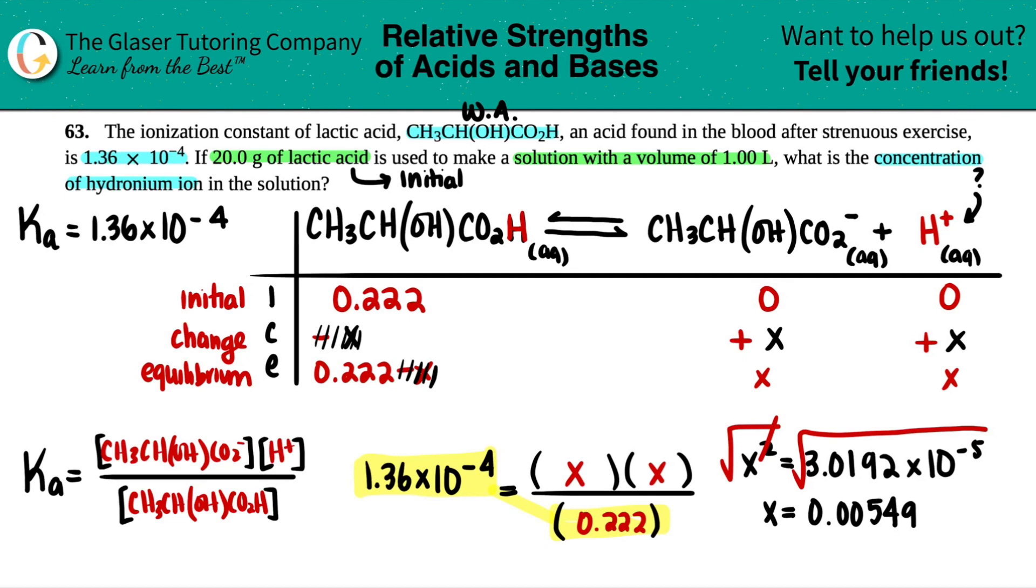And now we go to the actual question. They said, what was the concentration of hydronium ion? Hydronium ion was this one, and it was only x. So x was equal to the hydronium ion concentration, and that was 0.00549 molarity. And that's the end. They didn't ask for pH, so we don't have to go that extra step. They just wanted the hydronium. But that was it.